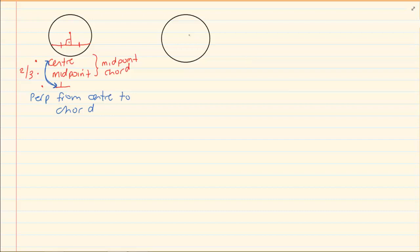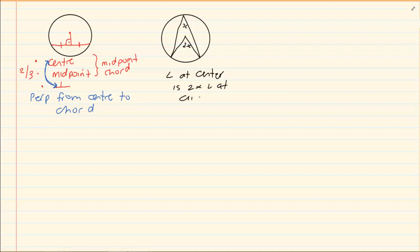The second rule is: the angle at the center is 2 times the angle at the circumference. You must remember that the one in the middle is always bigger. When you see a center, be wary — there are a lot of theorems that work with the word center.